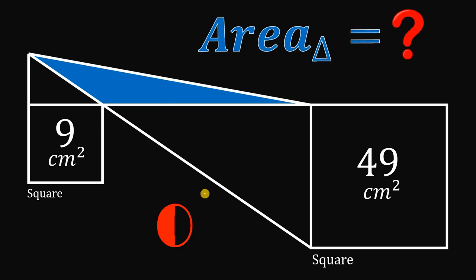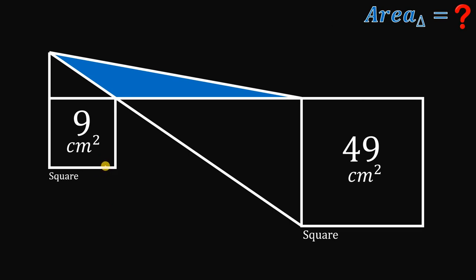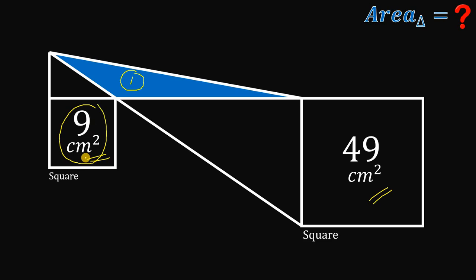Now let's answer this question together. Given these two squares having an area of 9 square centimeters and 49 square centimeters, our goal is to find the area of this triangle right over here. We know that the area of this small square is 9 square centimeters, so the side length must be equal to the square root of 9, which is simply 3.